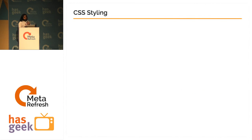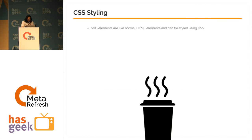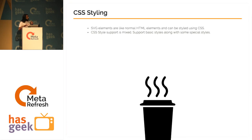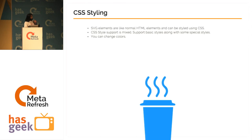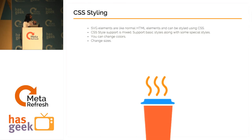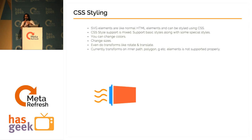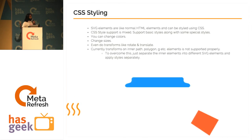The best part of SVGs is CSS styling. SVGs, like normal HTML elements, can be styled via CSS. The CSS support is basically mixed — it supports basic styles along with some special styles like fill and stroke. You can change colors of individual elements inside the SVG, change sizes, and even do transforms like rotate and translate. One hindrance is that inner elements currently do not support transforms properly, but since these are all text, you can pull out inner elements into different SVG files and have transforms on them.